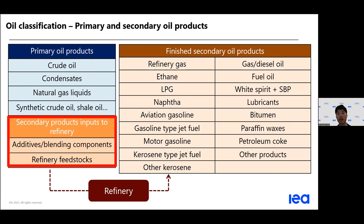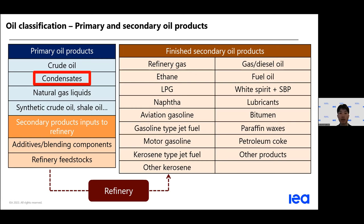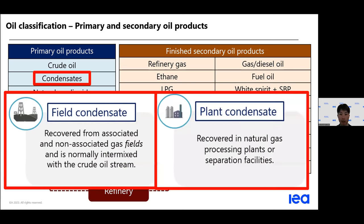The specifications defining these various oil products are available in the IEA manual or in the oil reporting instructions for those familiar with the joint annual oil questionnaire. Just to touch specifically on condensates, which are high-quality, light, and versatile oil needing fewer refinery processes before use. For example, condensates can be directly used as petrochemical feedstock to produce synthetic materials. There are basically two kinds: field condensates, recovered from associated and non-associated gas fields, and plant condensates, recovered in natural gas processing plants or separation facilities.